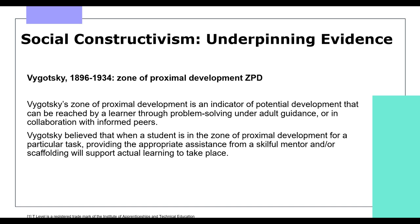Vygotsky's zone of proximal development is an indicator of potential development that can be reached by a learner through problem solving under adult guidance or in collaboration with informed peers. Vygotsky believes that when a student is in the zone of proximal development for a particular task, providing the appropriate assistance from a skilful mentor — the more knowledgeable other — and scaffolding will support actual learning to take place. An example of this would be learning to drive: you're ready to learn, you have appropriate assistance from the driving instructor, and once passed, the learning is cemented. Can you think of another example?